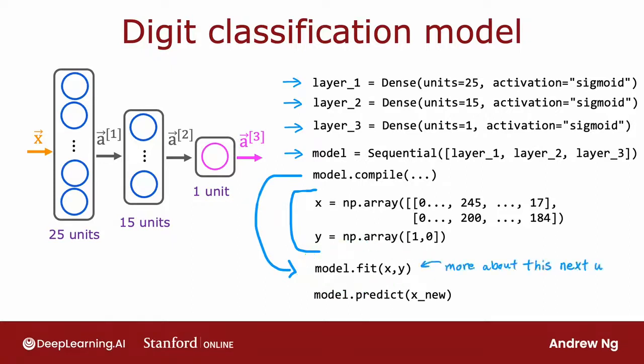Again, more on this next week. And finally, to do inference or to make predictions, you can use model.predict on x new. And similar to what you saw before with the coffee classification network, by convention, instead of assigning layer one, layer two, layer three explicitly like this, we would more commonly just take these layers and put them directly into the sequential function. So you end up with this more compact code where you just tell TensorFlow, create a model for me that sequentially strings together these three layers, and then the rest of the code works same as before.